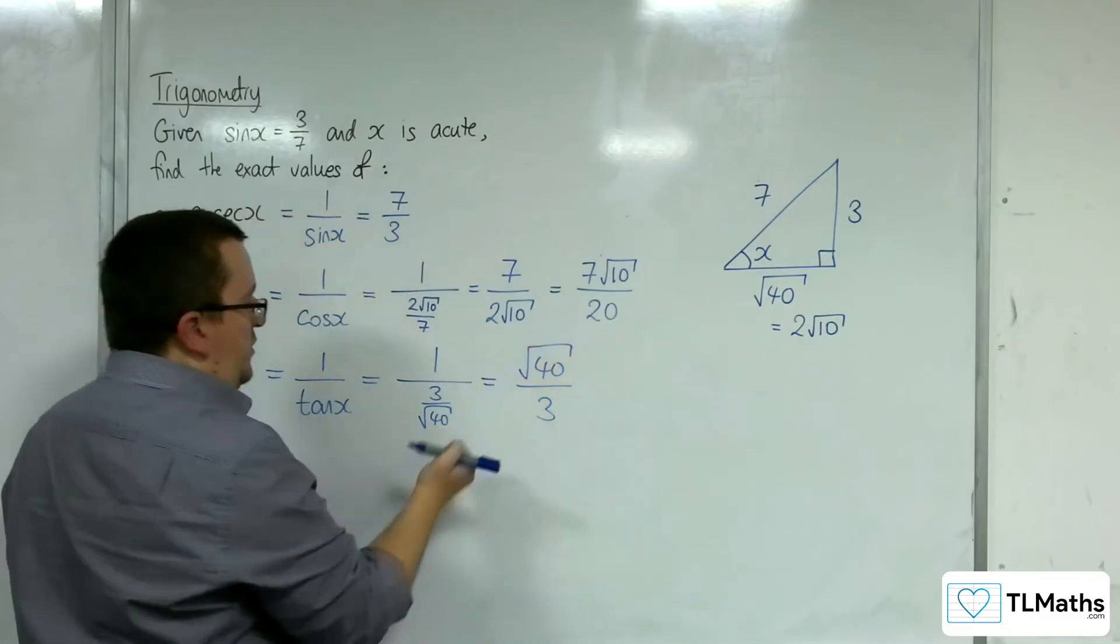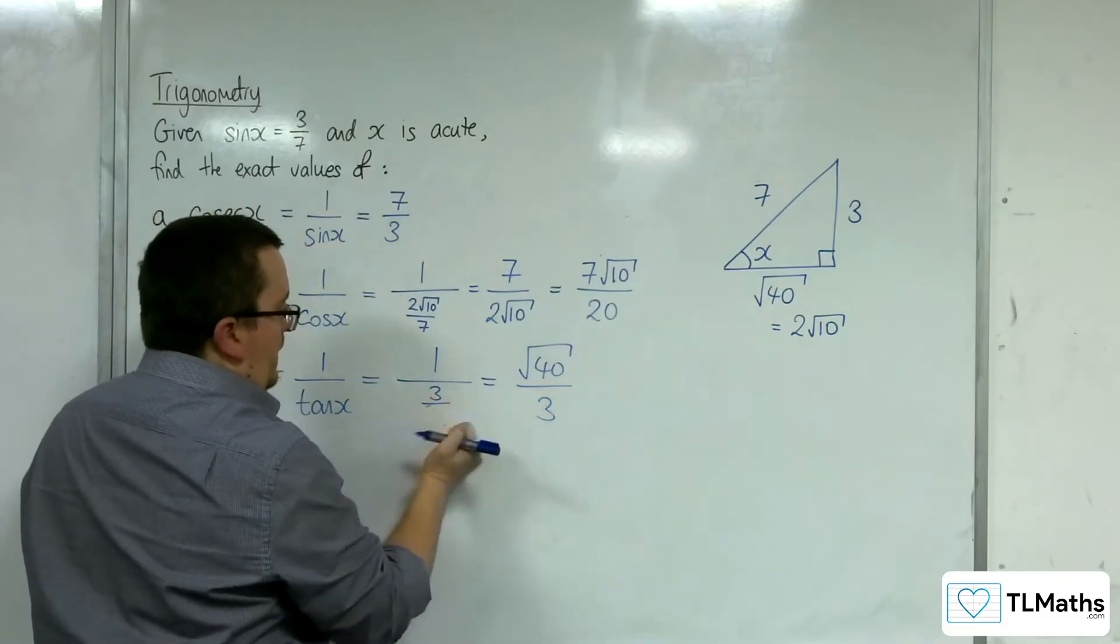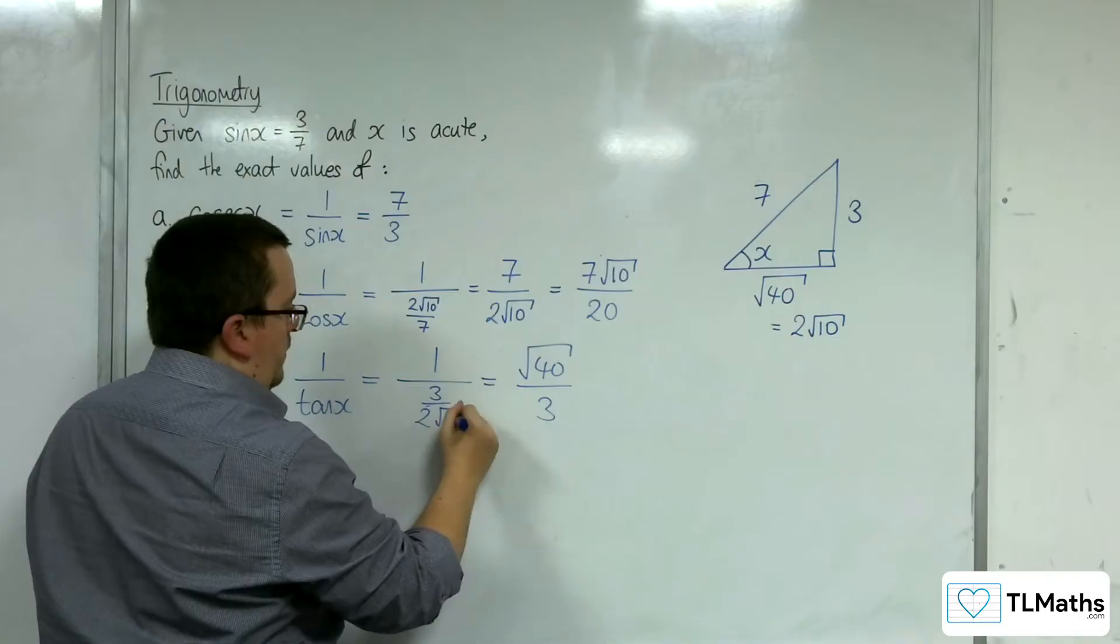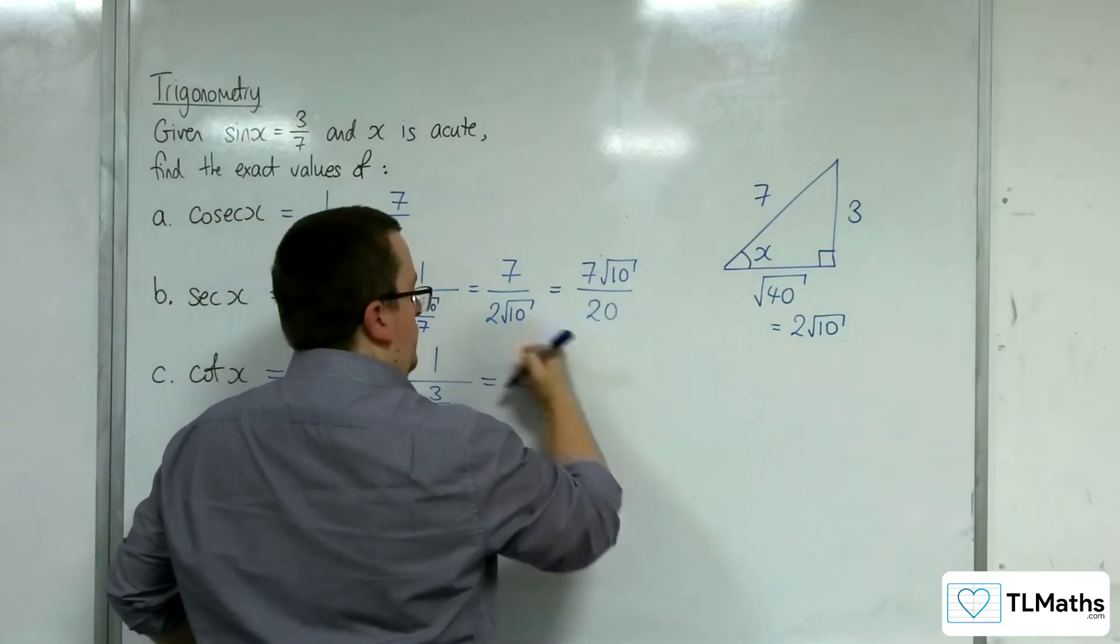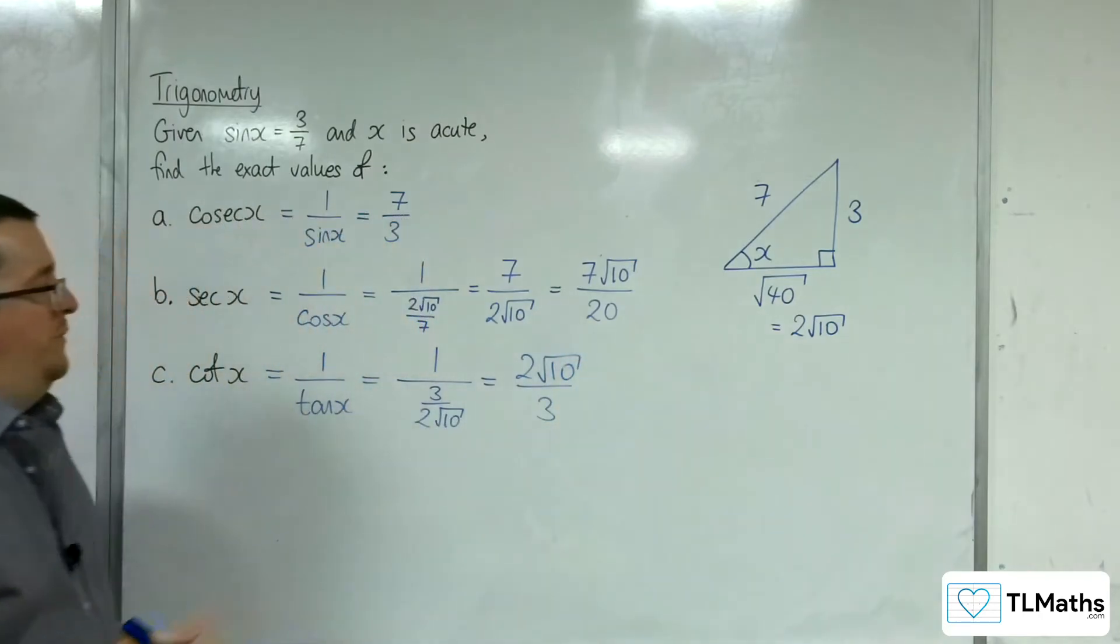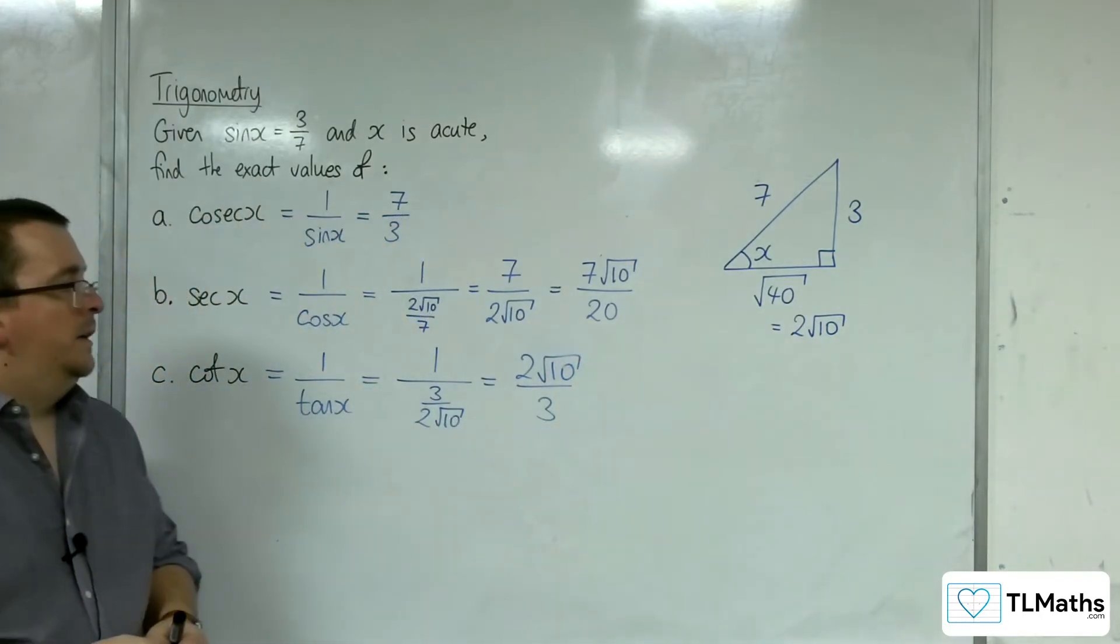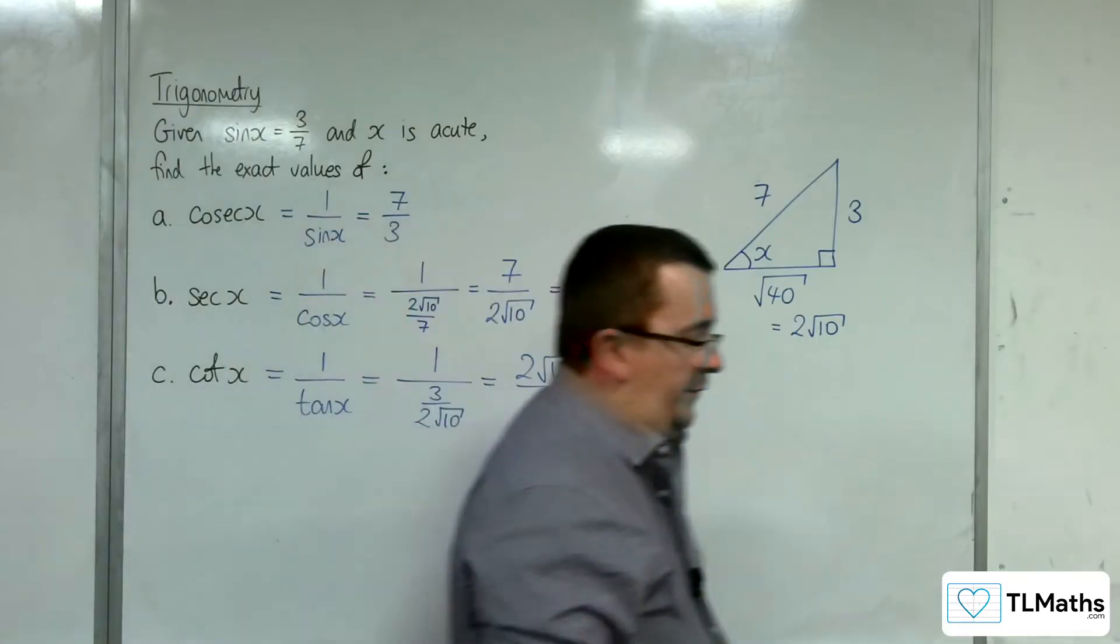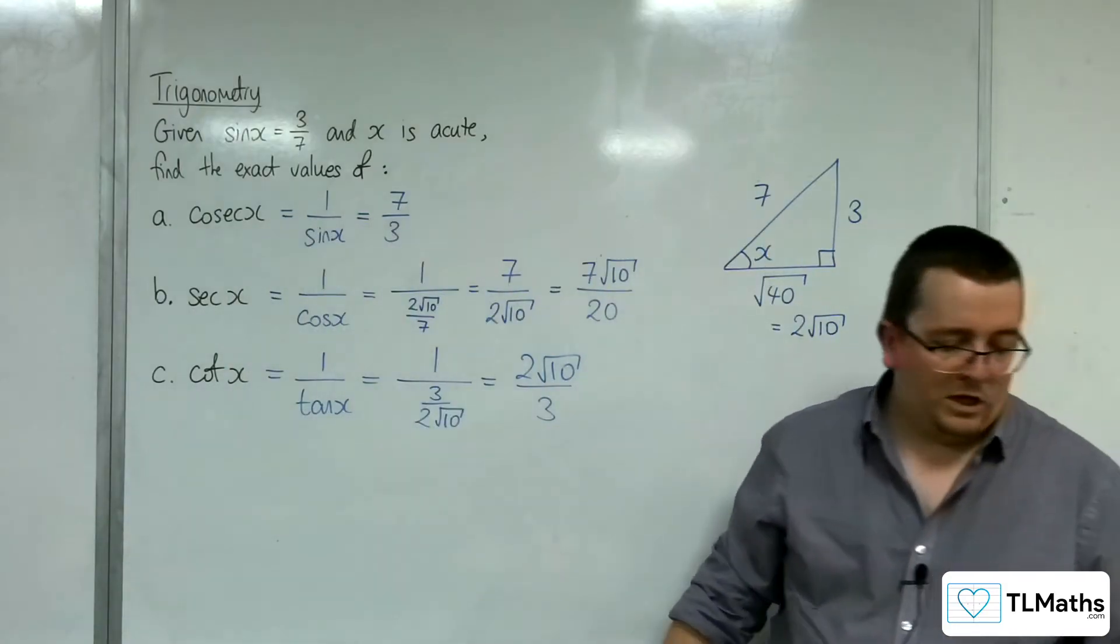We had √40 as 2√10, so we can rewrite that as 2√10/3. These are the exact values given that x is acute.